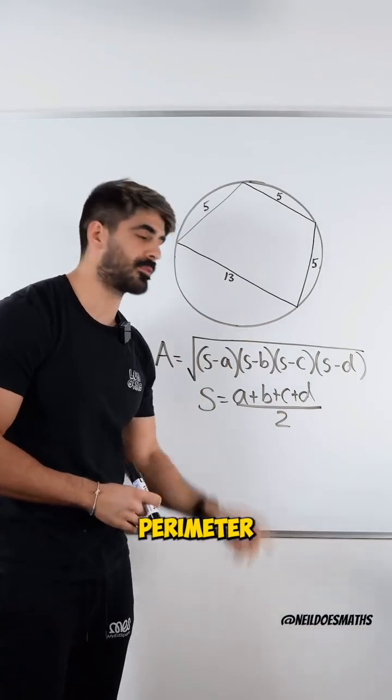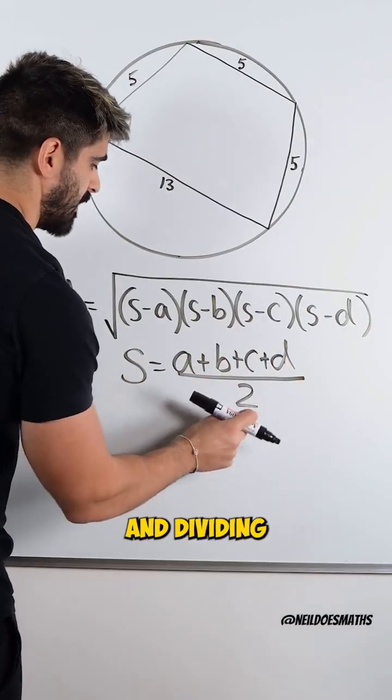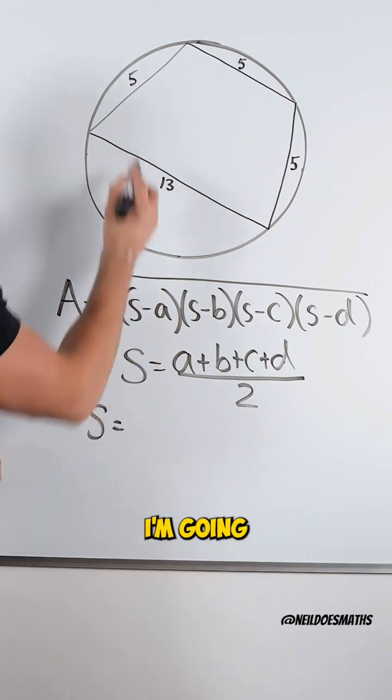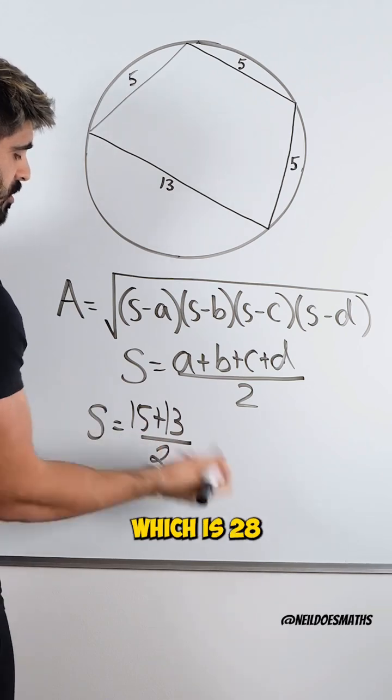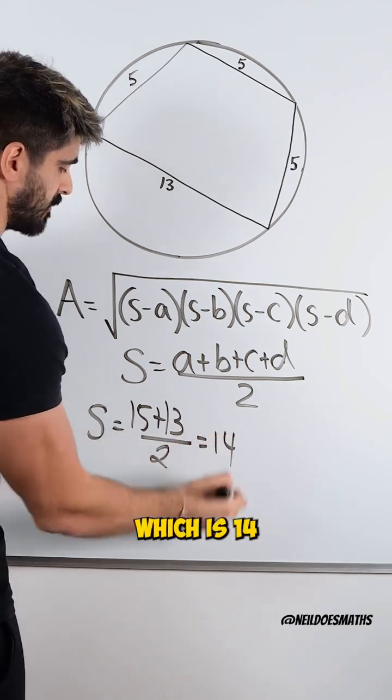So the first thing I'm going to do is find the semi perimeter by adding up all the lengths and dividing by two. In this case I'm going to have 5 plus 5 plus 5 which is 15 plus the 13 divided by two which is 28 divided by two which is 14.